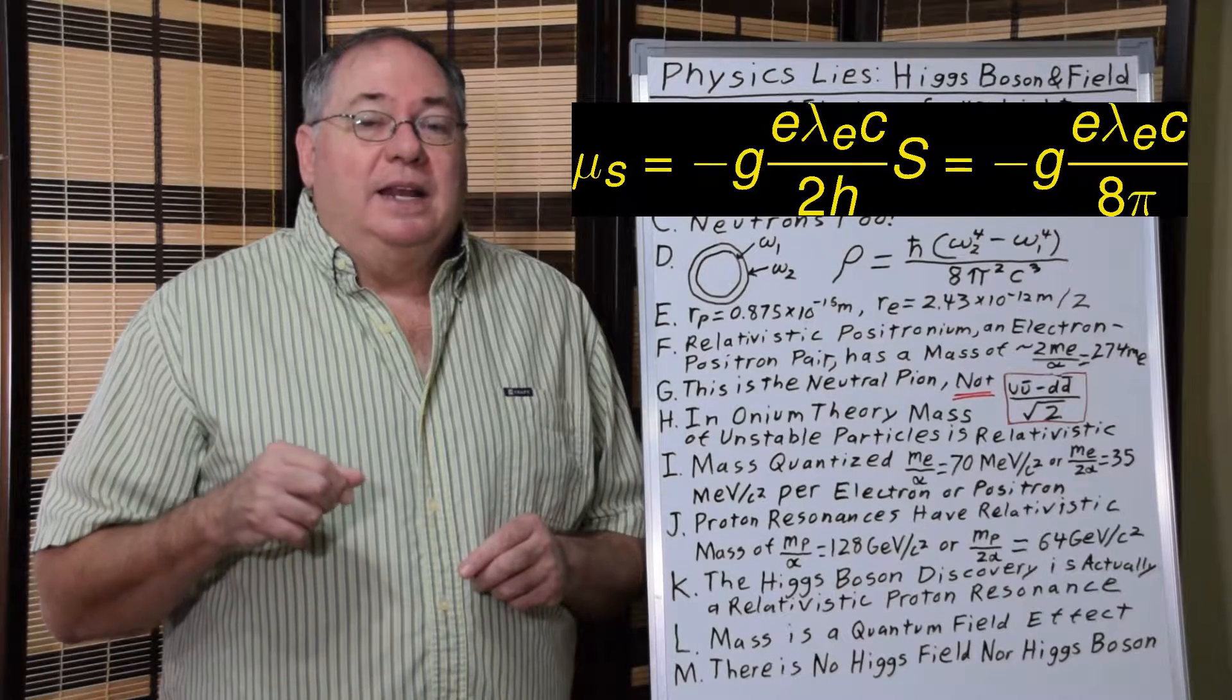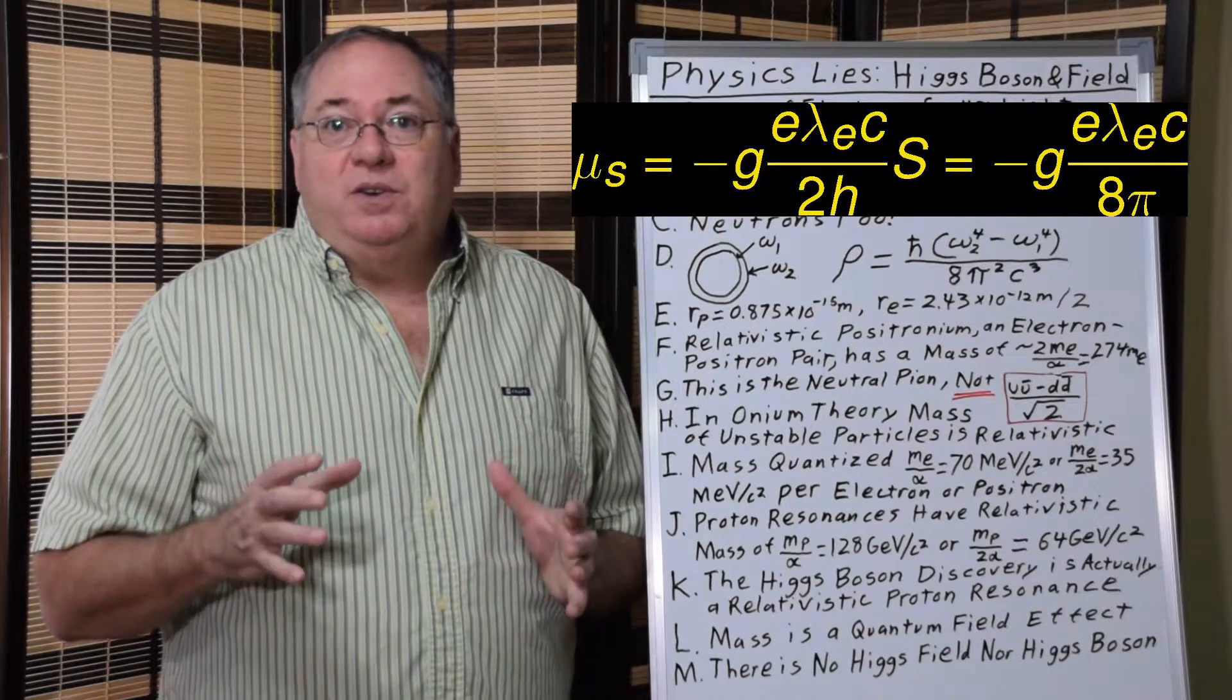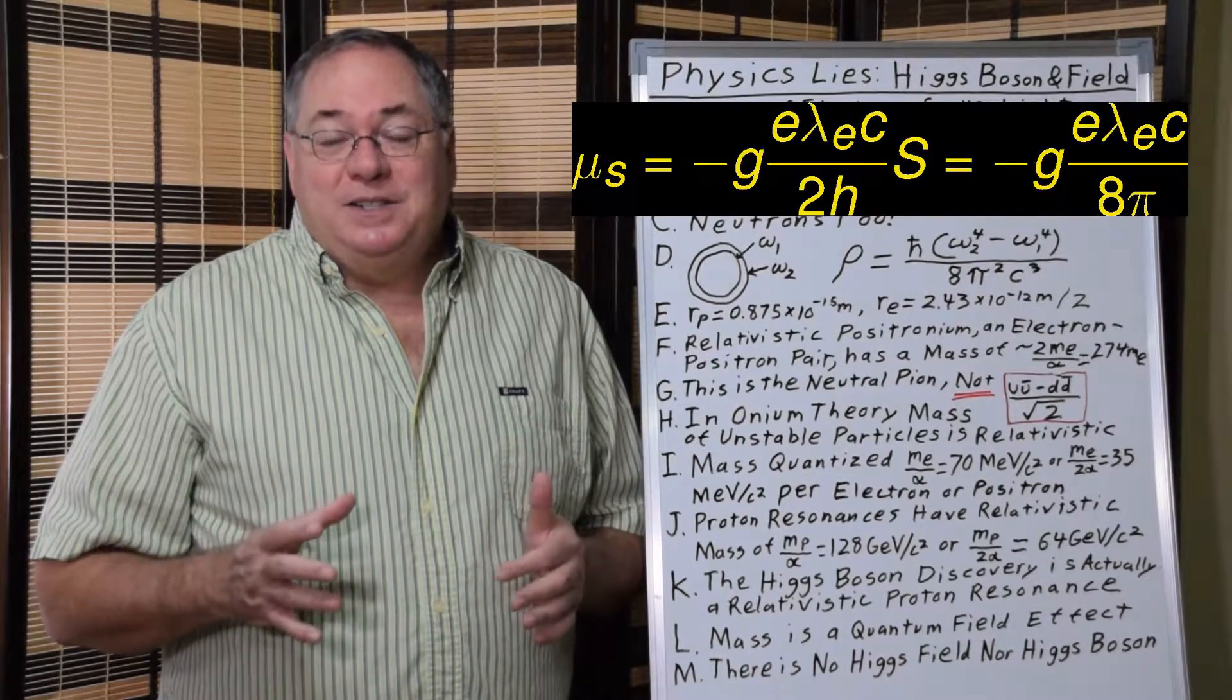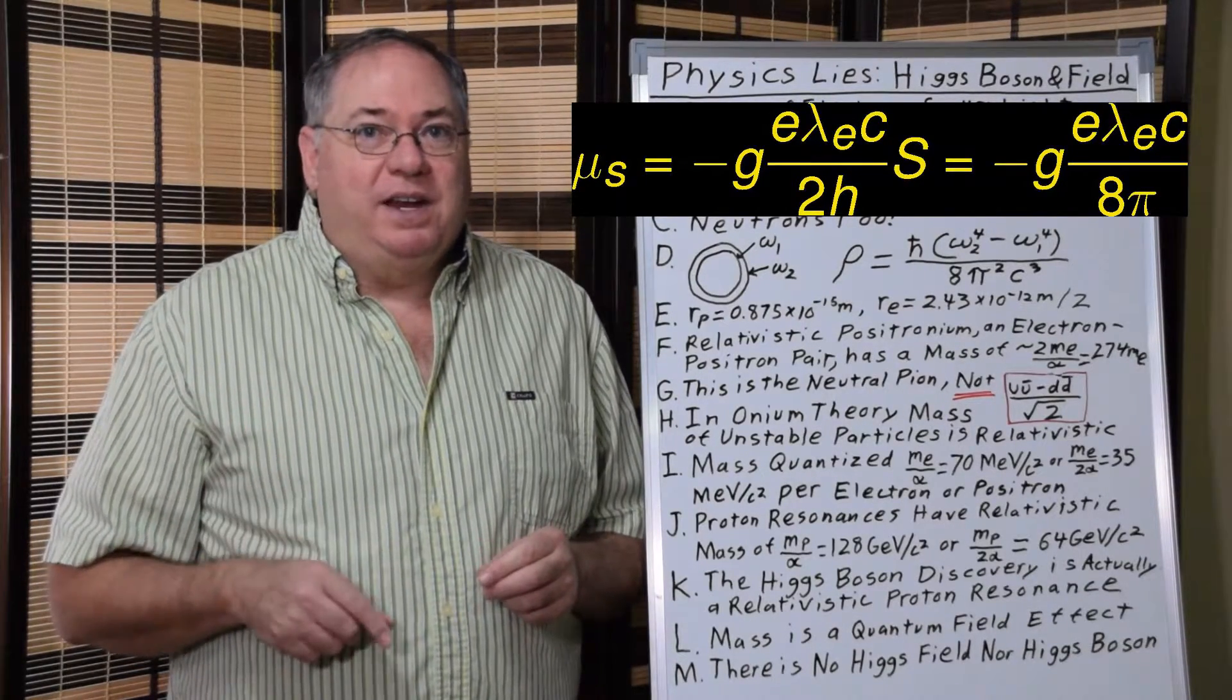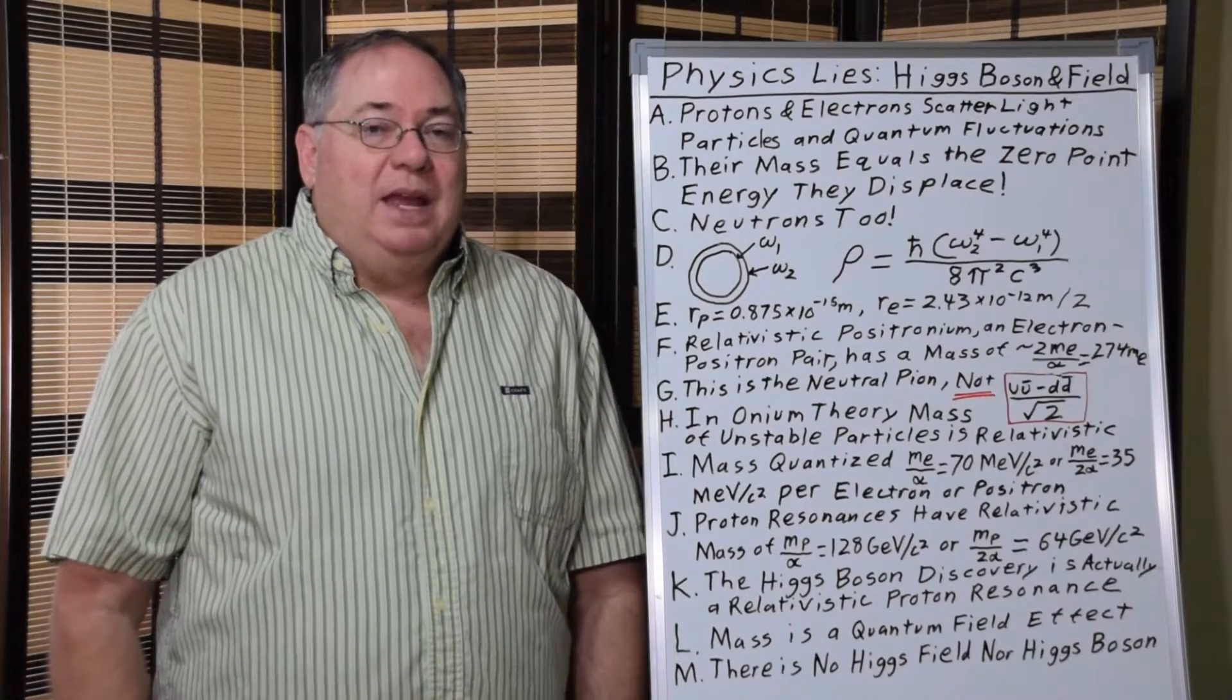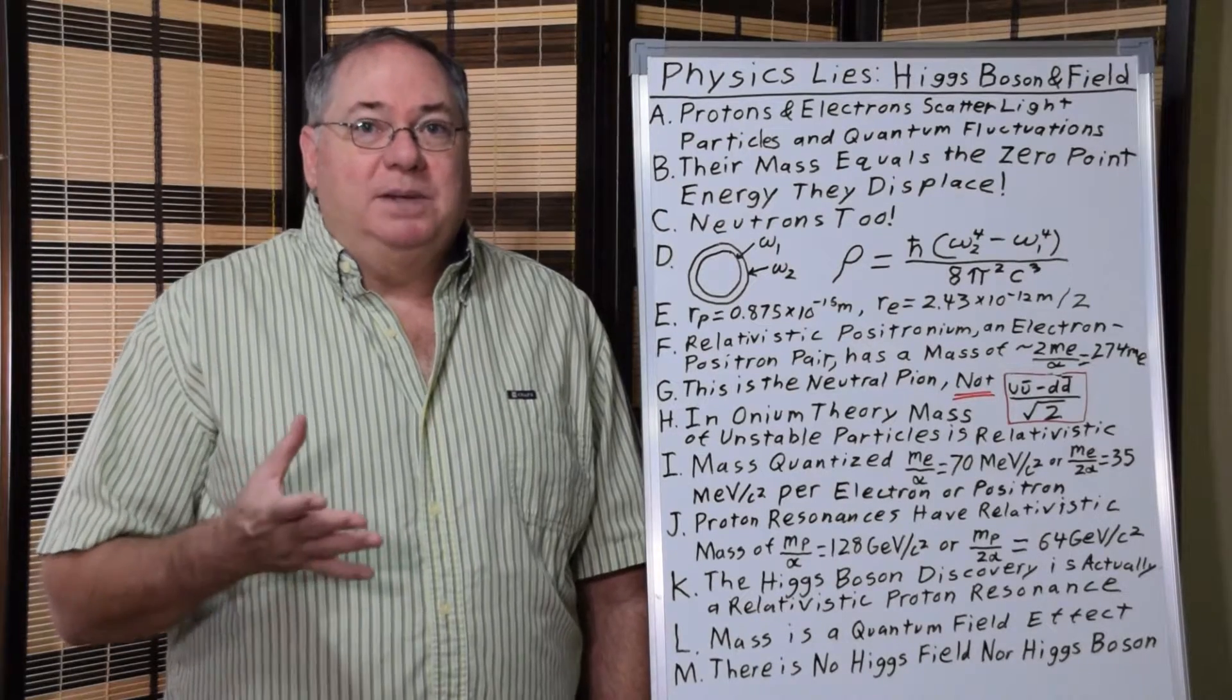And it turns out that with an electron, its magnetic moment is equal to a spherical shell with the diameter of the Compton wavelength, with the charge of the electron rotating at the speed of light, times the g-factor. So in terms of both its mass and its magnetic moment, and also its spin, the electron behaves like it's a Compton-sized shell.